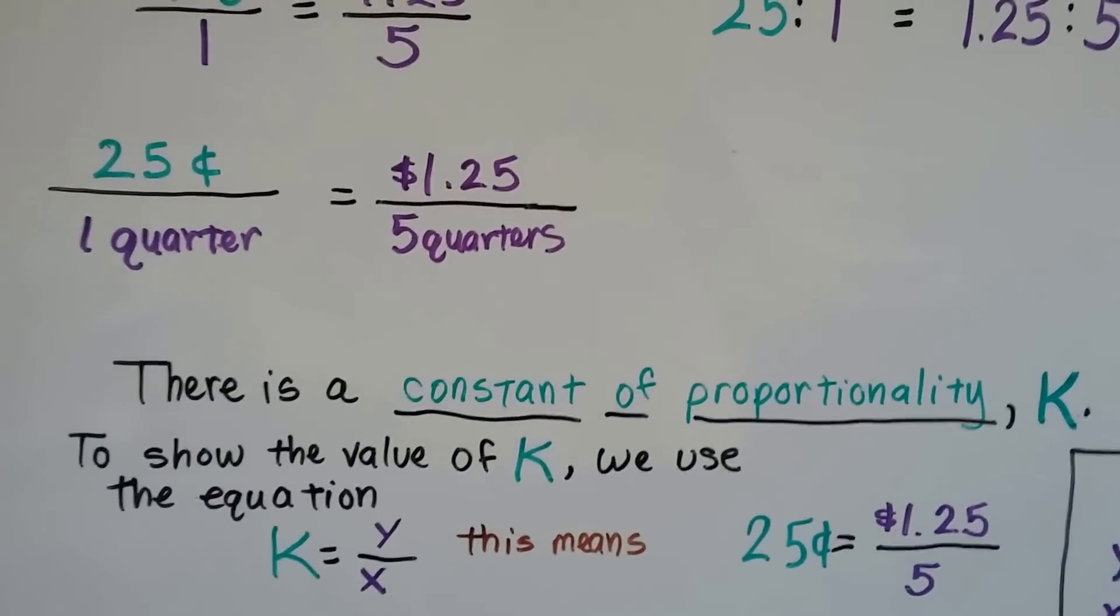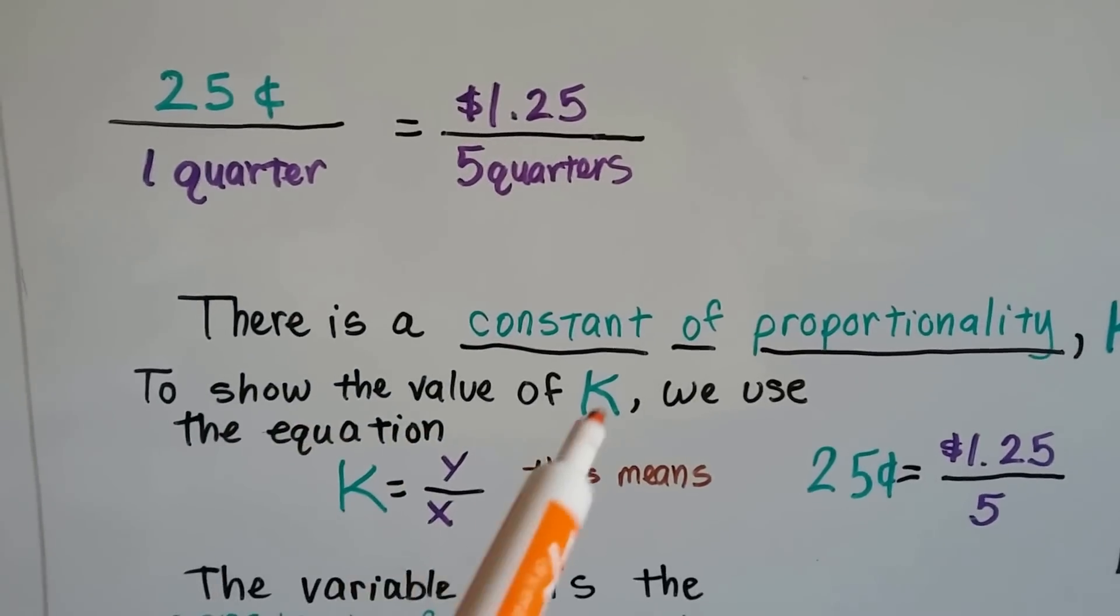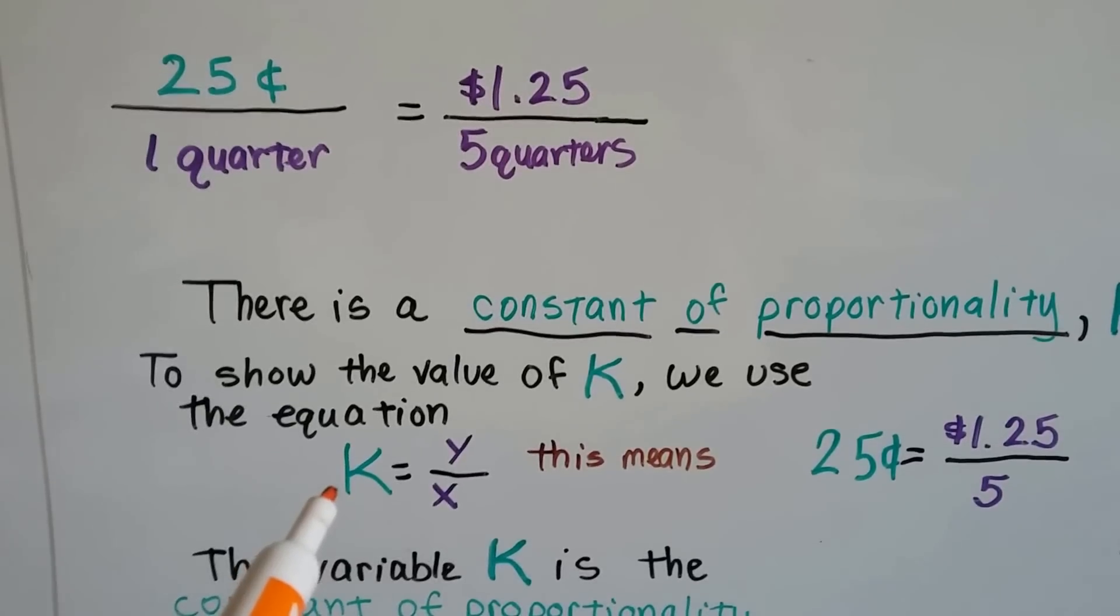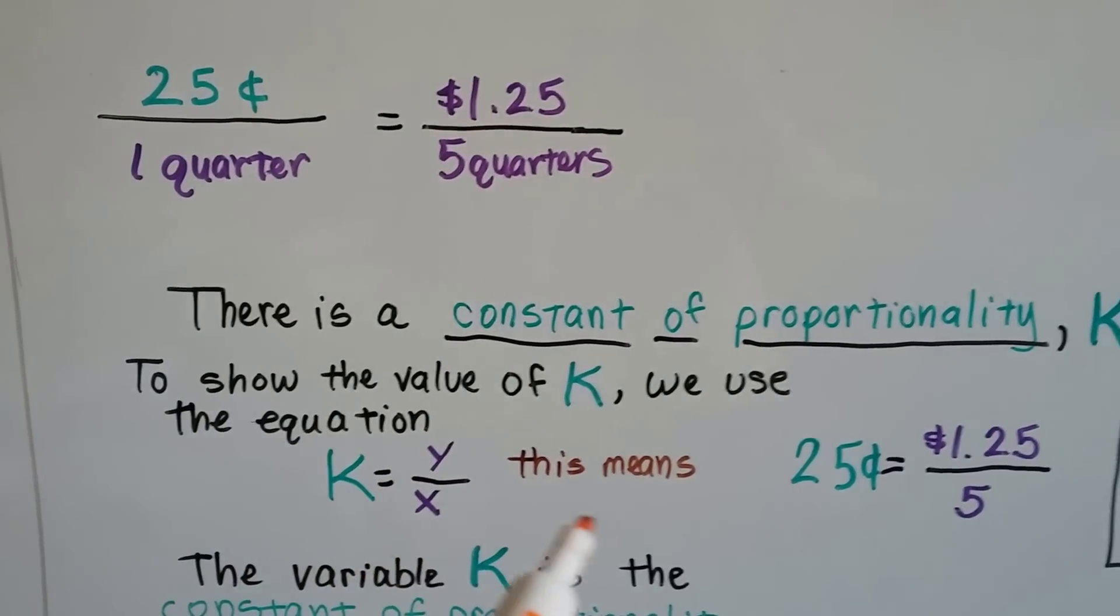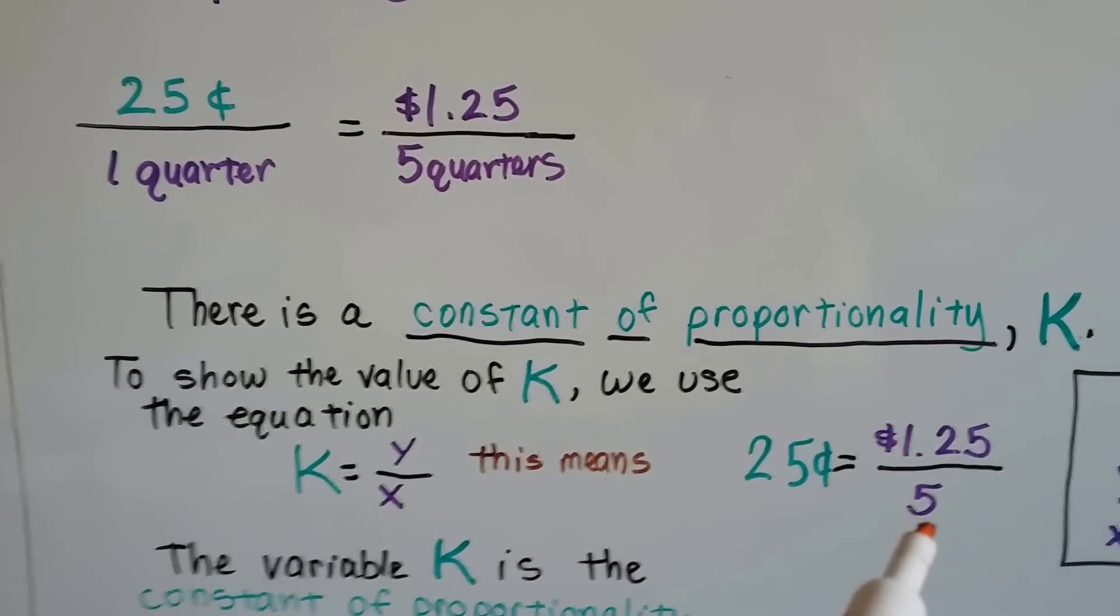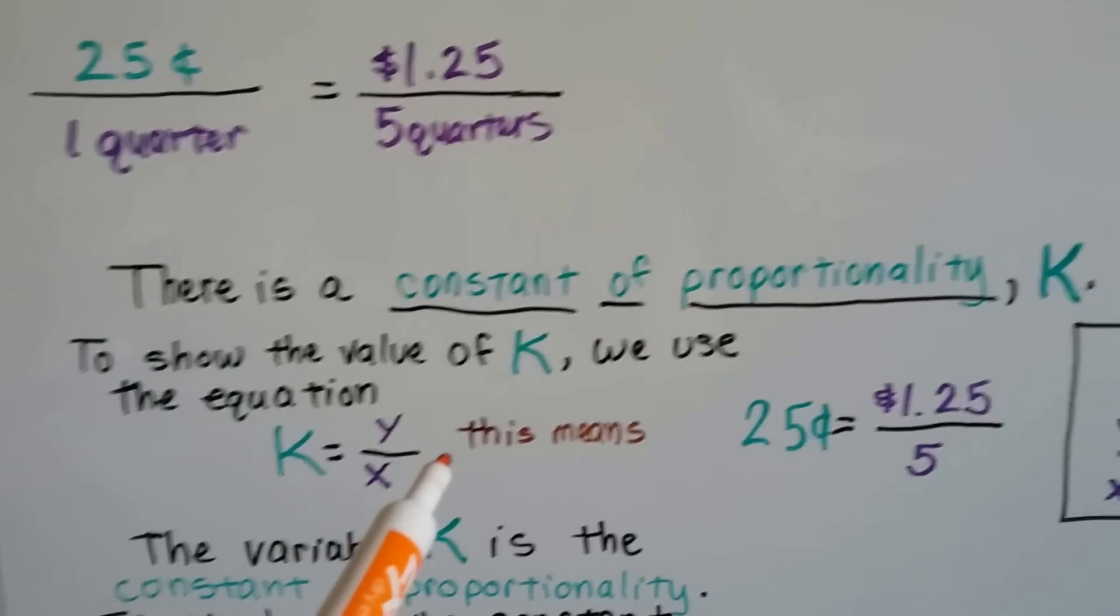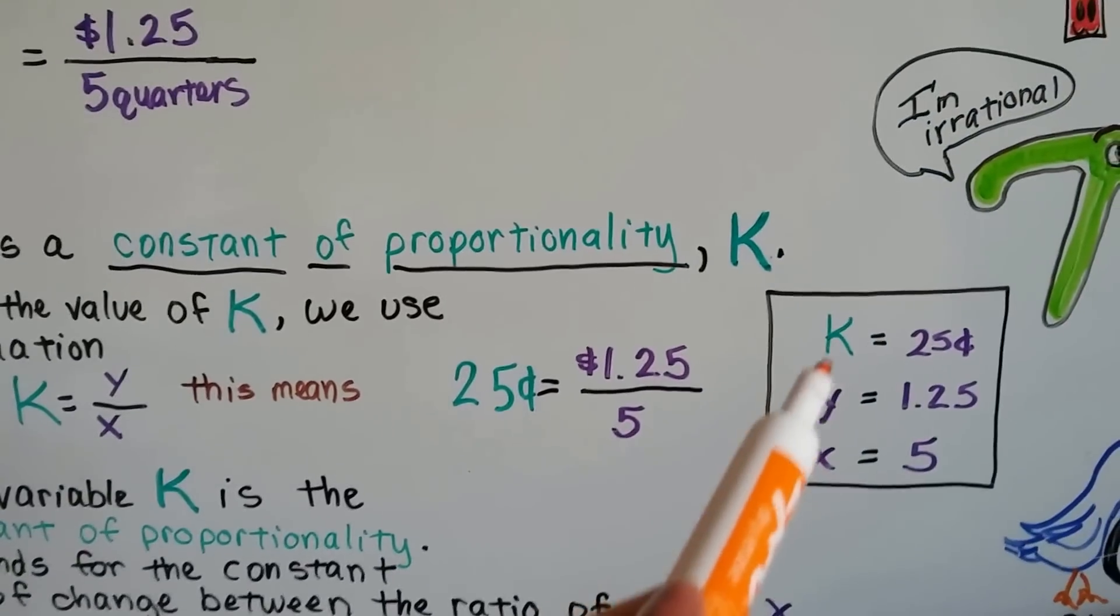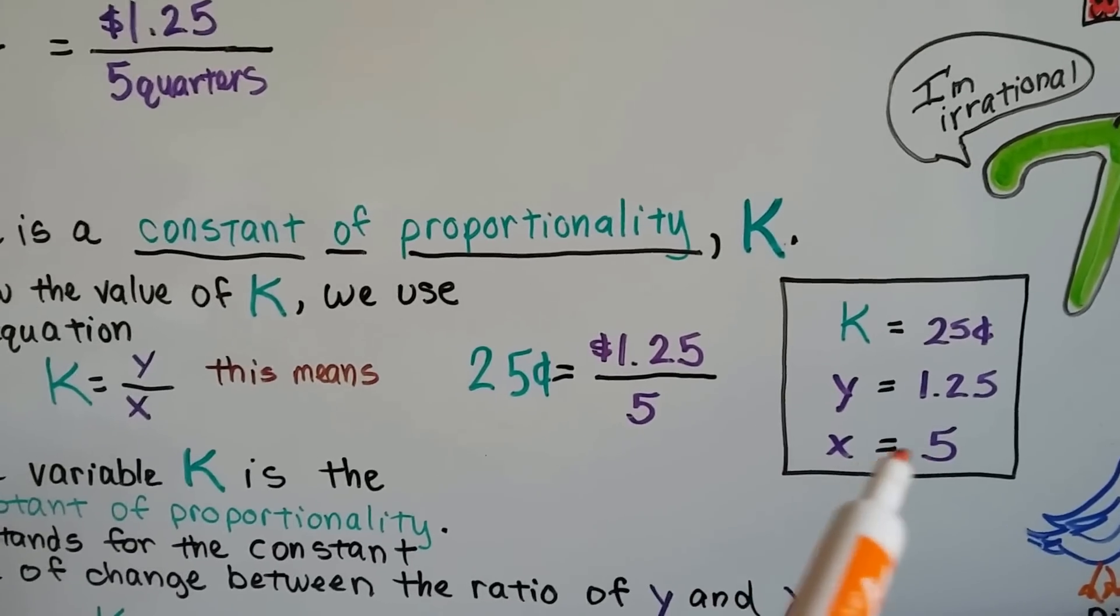There's a constant of proportionality, and we call it K. To show the value of K, we use the equation K = Y/X. In this example, $0.25 = $1.25 divided by 5. K is $0.25, Y is $1.25, and X is 5.